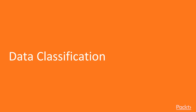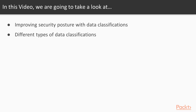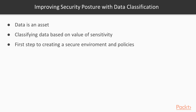Let's talk about Data Classification. In this video, we're going to take a look at improving your security posture with data classifications and the different types of data classifications. We can improve our security posture by classifying data because data is an asset, and we classify data based on the value of its sensitivity. This is a very important first step to creating a secure environment and to base policies off these classifications.